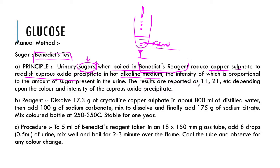The result will be reported as 1+, 2+, etc., depending upon the color change. If there is less color change, that means 1+; quite more means 2+, and so on. Regarding the reagents, Benedict's reagent contains 17.3 grams of crystalline copper sulfate and 800 ml of distilled water, along with 100 grams of sodium carbonate to give the alkaline medium. You have to mix it well and then add 175 grams of sodium citrate also. Keep it in an amber-colored bottle at 25°C to 35°C — it will be stable for 1 year.